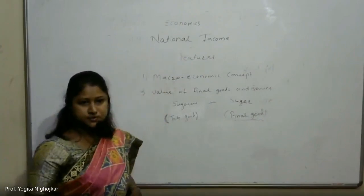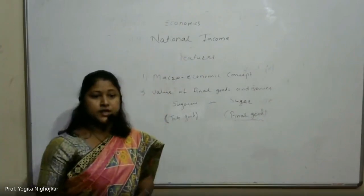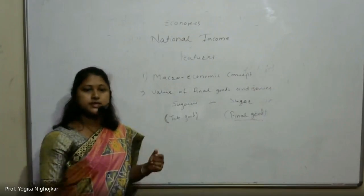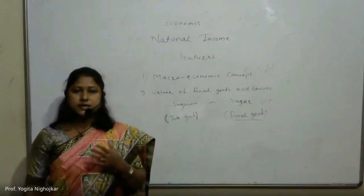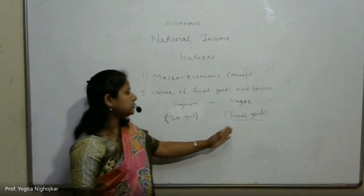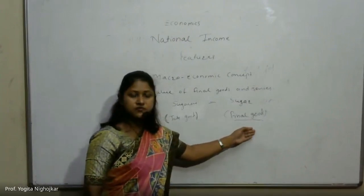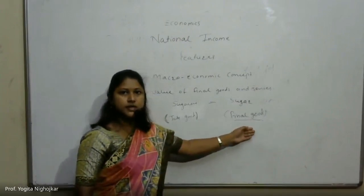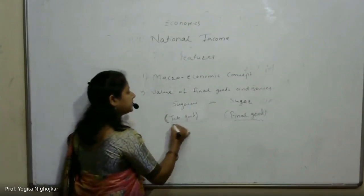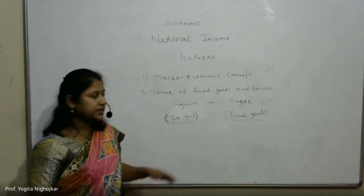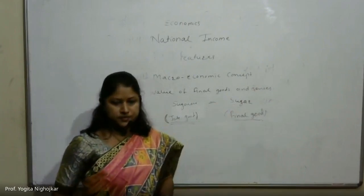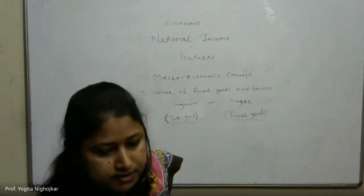Double counting means estimating the value of goods more than once. When you account for a final good, you don't separately account for intermediate goods, because they are already included in the final good.